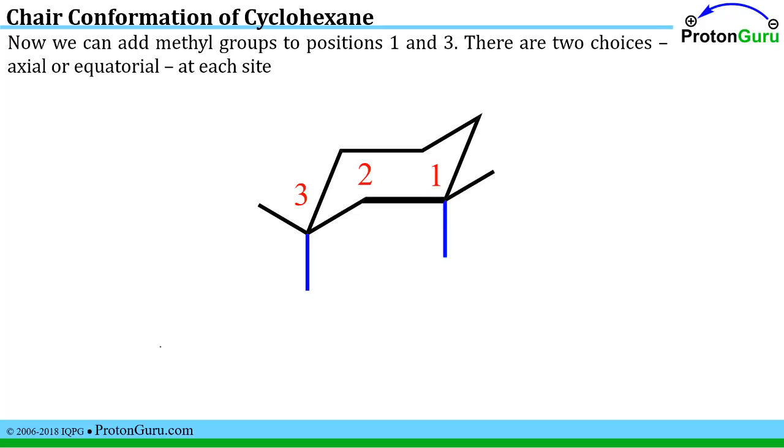And the problem asks us to put a methyl group on position 1 and a methyl group on position 3. Now for each of those there are two choices. Our methyl group could go equatorial or it could go axial down here. So we have two choices for each one.